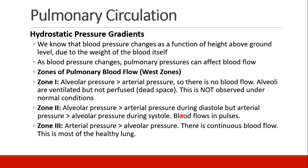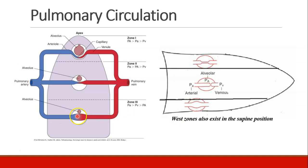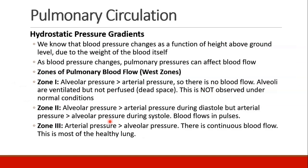In zone 3, arterial pressure is greater than venous pressure, and both of these pressures are greater than alveolar pressure. In this case we have constant or continuous blood flow during both systole and diastole, and most of the healthy lung falls into this zone. Some people talk about a fourth zone as well, but we're not going to get into that in this course.